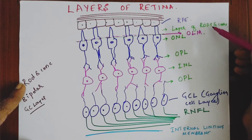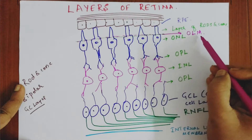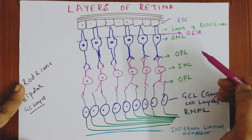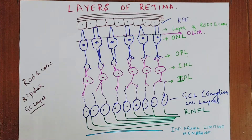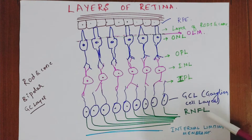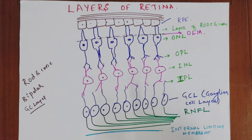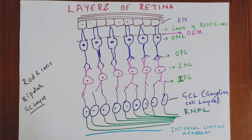So finally we have all the layers of the retina: retinal pigment epithelium, layer of rods and cones, outer limiting membrane, outer nuclear layer, outer plexiform layer, inner nuclear layer, inner plexiform layer, ganglion cell layer, retinal nerve fiber layer, and the internal limiting membrane. This is more than enough if you write it in your exams for a three-mark question naming the layers of the retina.